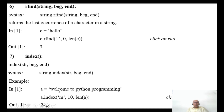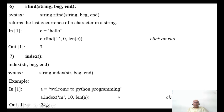Starting from index 10 and counting forward: 10, 11, 12, 13, 14, 15, 16, 17 (space), 18, 19, 20, 21, 22 — the first 'm' after index 10 appears at the 24th index. There is also one more 'm' at index 25, but the index function considers only the first occurrence counting from the left, which is why you get 24.